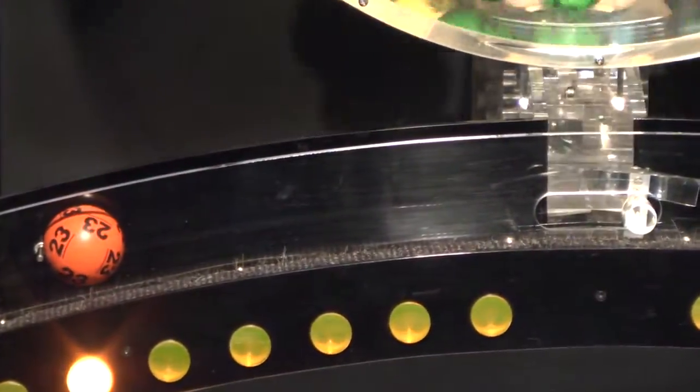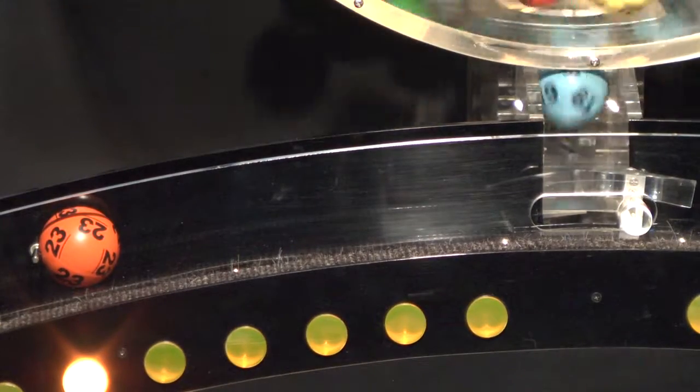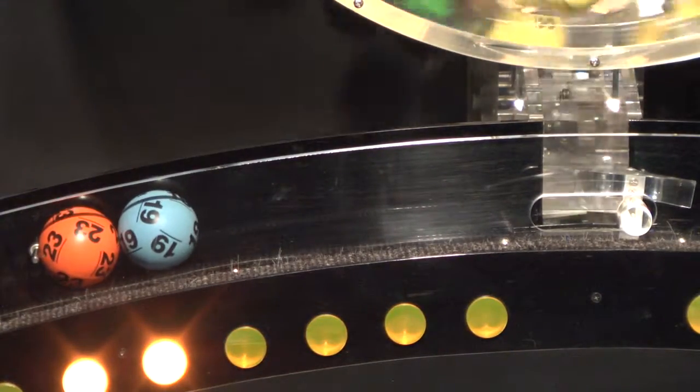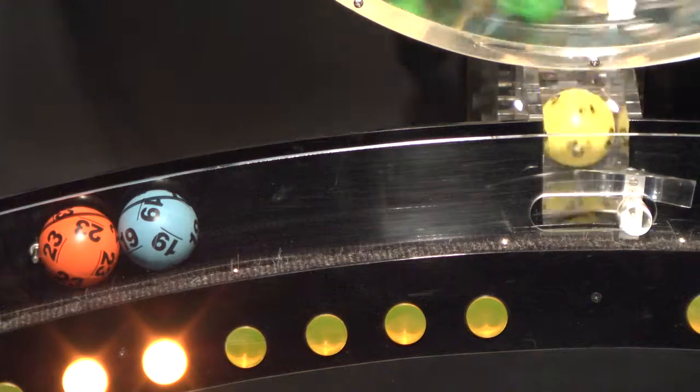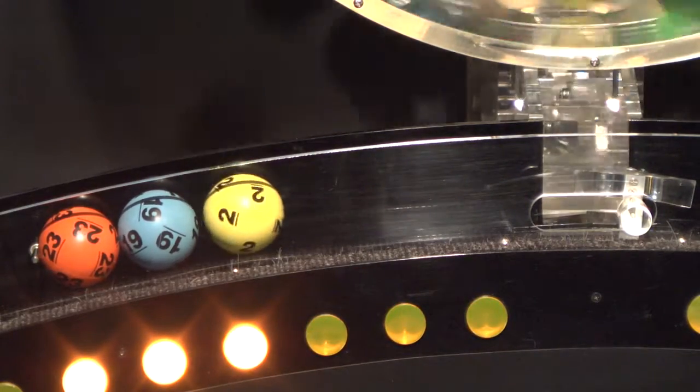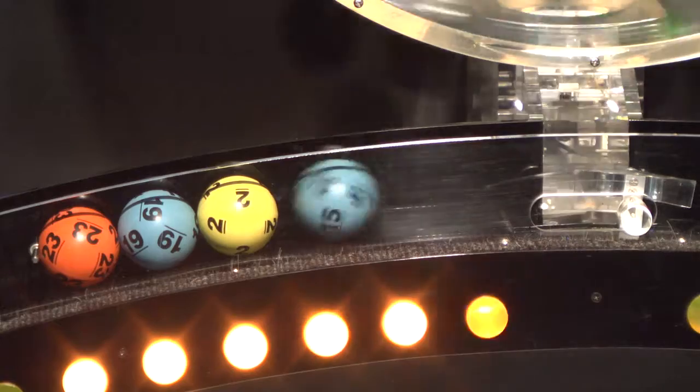First number is 23. Rolling behind that, number 19, followed by 2. If you match these three numbers you've already won a prize.